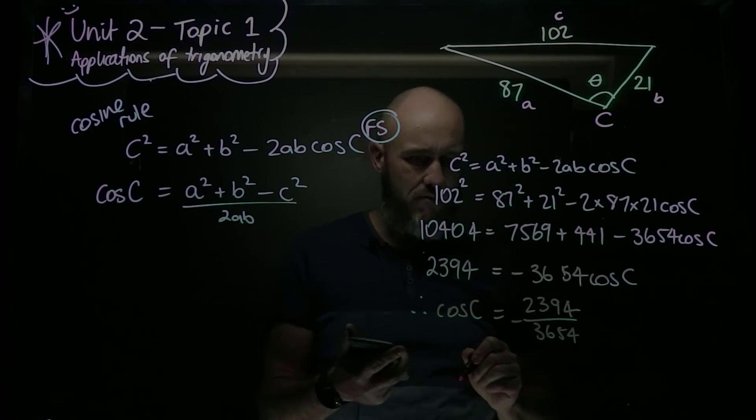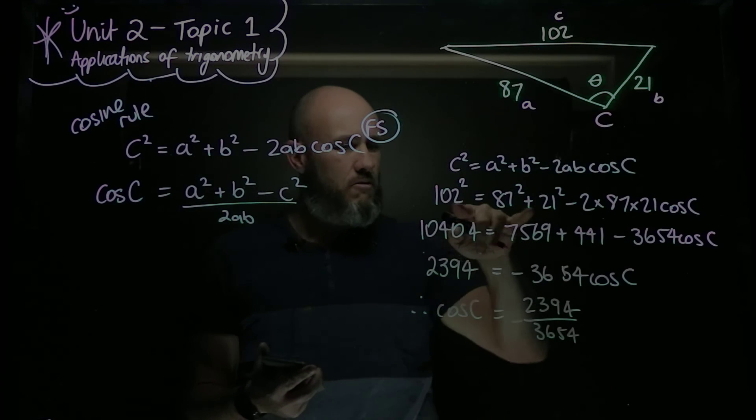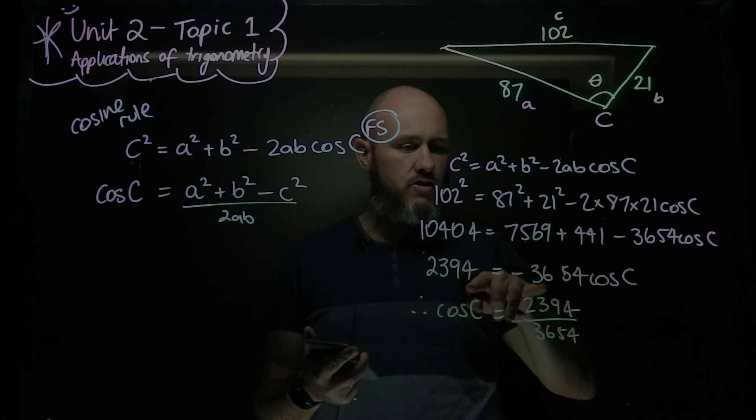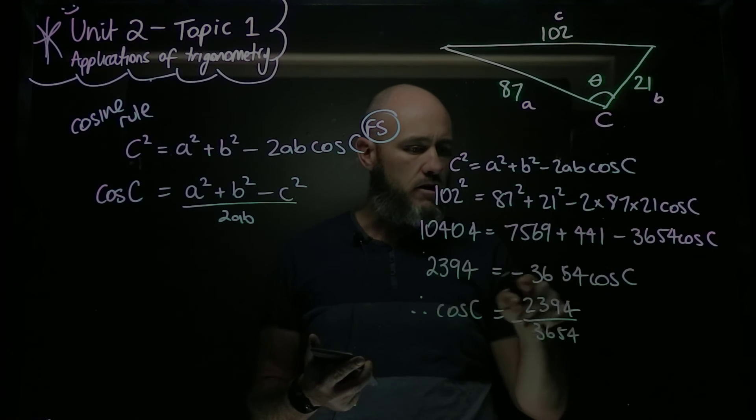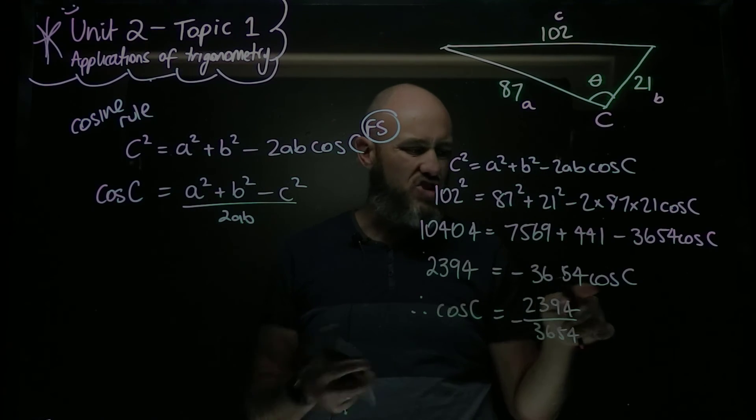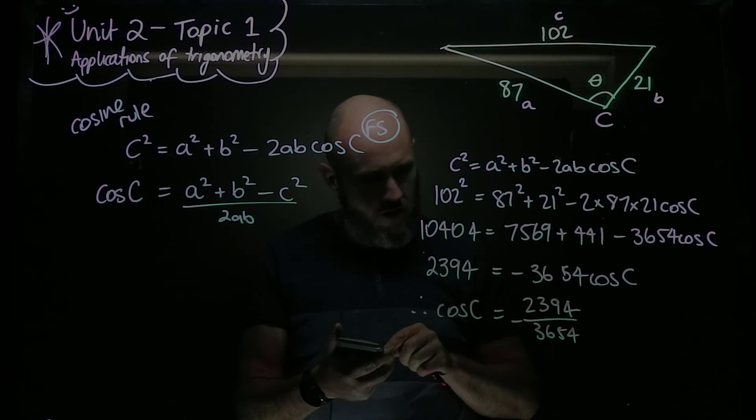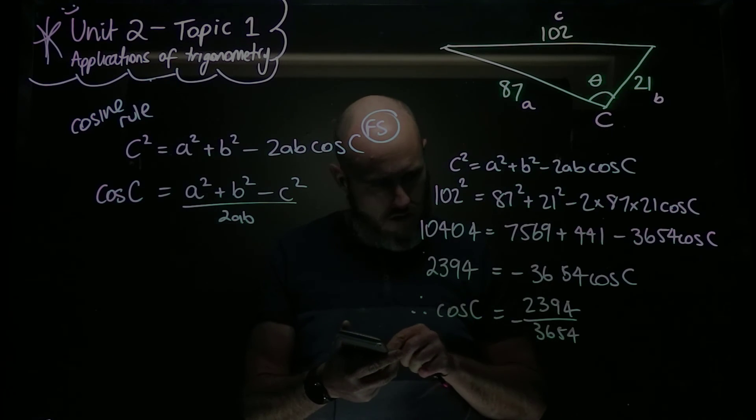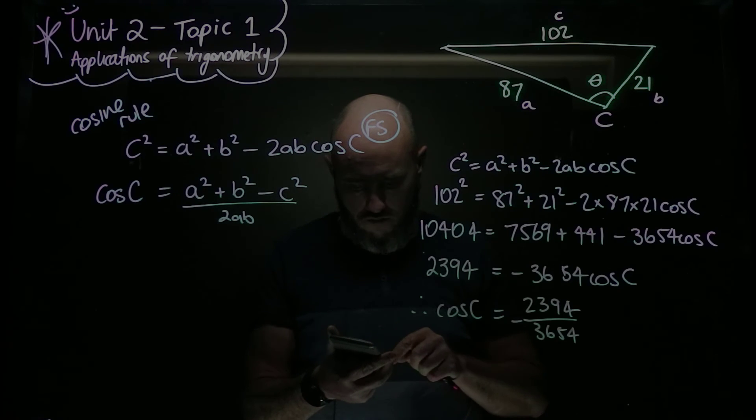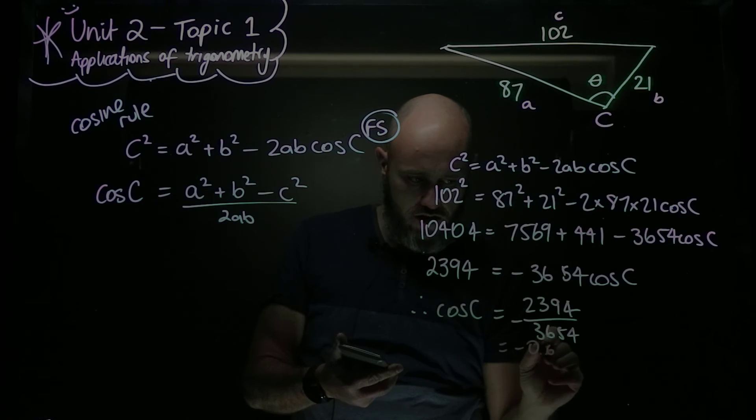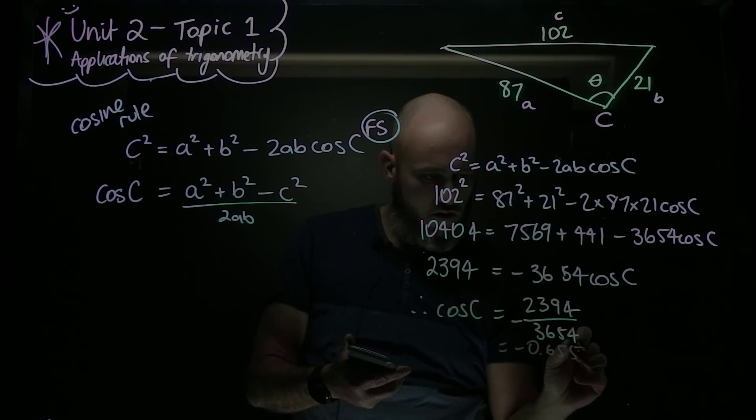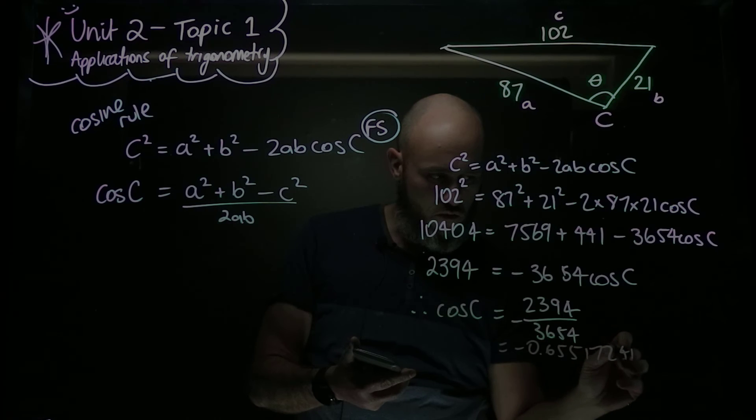So this is running through: evaluate, get my evaluation, subtract that one and that one from here. I'm left with that, and then divide by this number and do a cheeky swap as well. I like the cos C on that side. So divided by negative 3654. So this is equal to negative 0.6551724138.